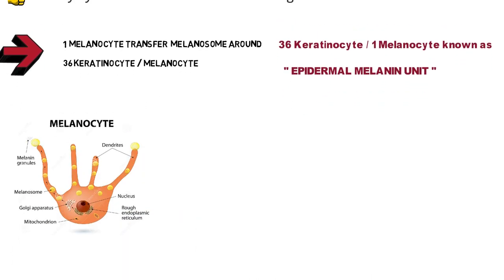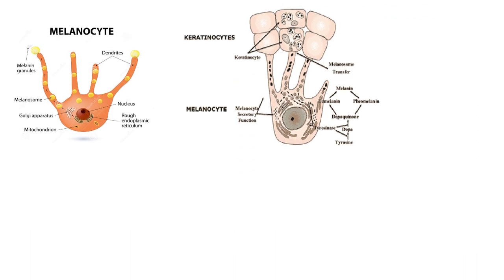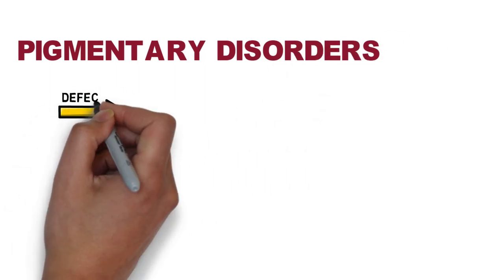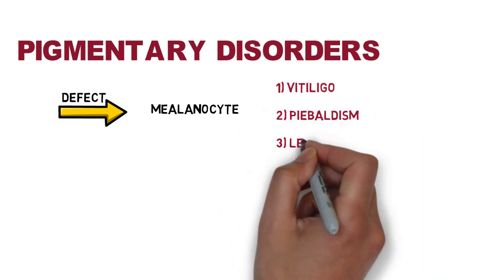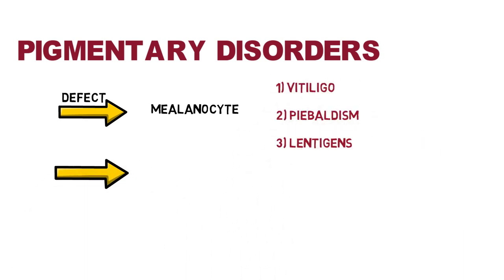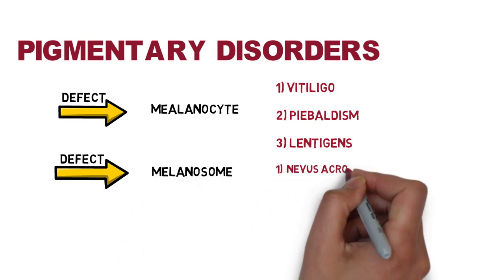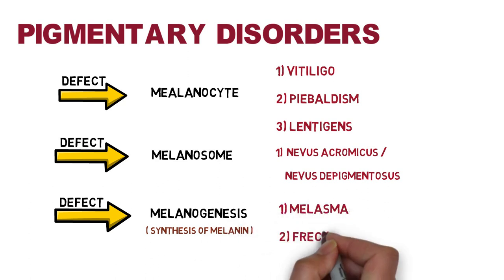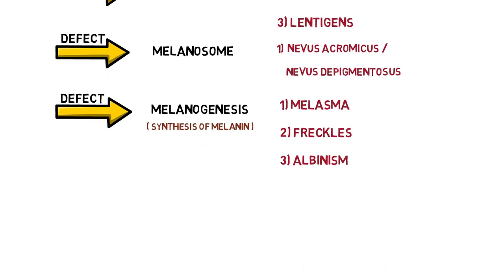There are pigmentary disorders associated with defects at different levels. If there is a defect in melanocytes, you can see vitiligo, piebaldism, and lentigines. If there is a defect in melanosomes, you can see nevus achronicus or nevus depigmentosus. If there is a defect in melanogenesis — that is, synthesis of melanin — you can see melasma, freckles, and albinism.